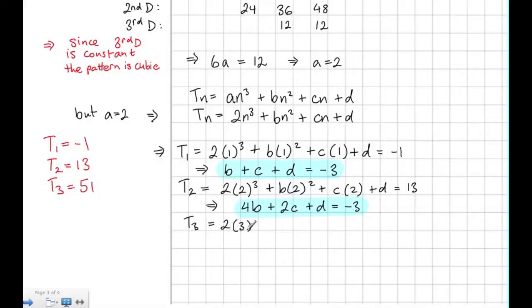Lastly, when we sub in 3 for n, term 3 has a value of 51. And we get 9b + 3c + d is equal to 51 - 54, which again is -3.